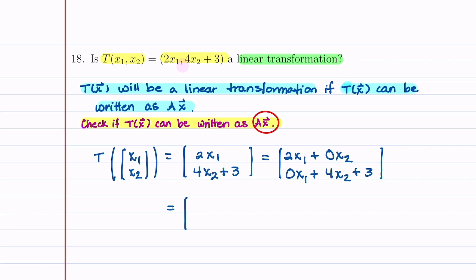We're going to create a matrix A that multiplies x₁, x₂. When we look back at this matrix we can see that our A is going to be 2, 0, 0, 4 and then we have this extra component. So what we're going to do with that component is we're going to have to add on a vector 0, 3.